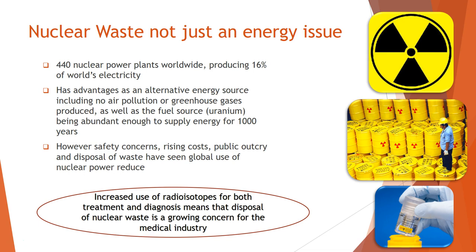Nuclear energy produces no air pollution or greenhouse gases — other than water — and uranium is abundant. Australia has a fairly large amount of uranium and could supply energy for about a thousand years, which is longer than our oil reserves. However, it is still a limited resource and would technically run out. The main concerns with nuclear power are safety concerns and the rising costs of ensuring it is safe.